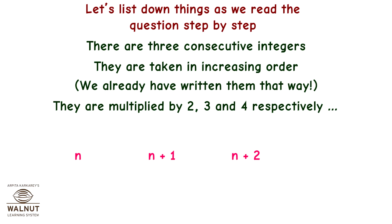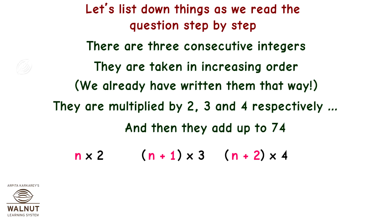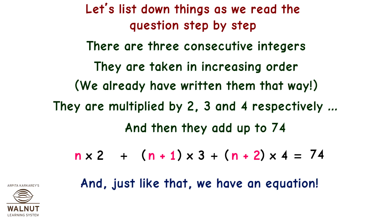Therefore we get n into 2, (n plus 1) into 3, and (n plus 2) into 4. They add up to 74. So our equation is: 2n plus 3(n plus 1) plus 4(n plus 2) equals 74. And just like that we have an equation.